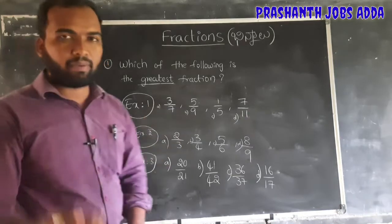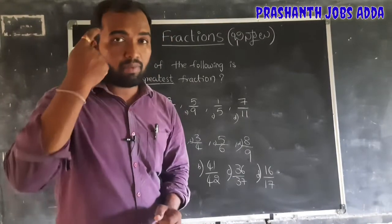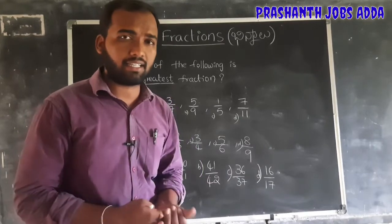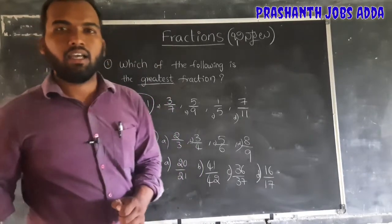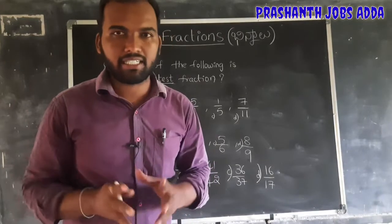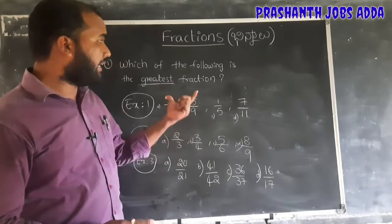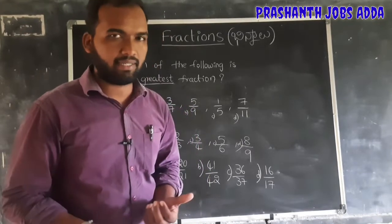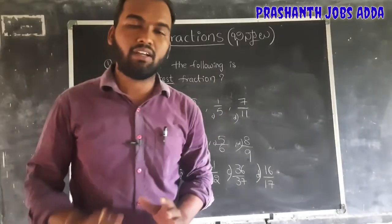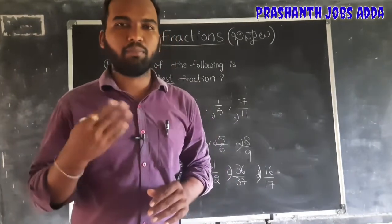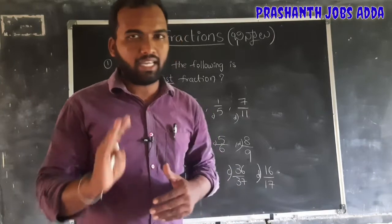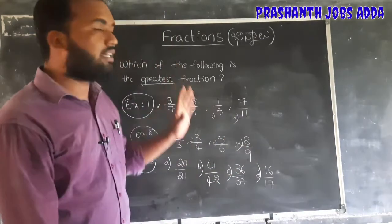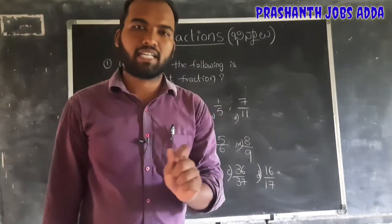Exercise number 3: option A is 20 by 21, option B is 41 by 42, option C is 36 by 37, and option D is 16 by 17. Use whichever method is easiest, answer all three questions, and write answers in the comment box. This is Part 1 of fractions. Parts 2, 3, and 4 videos will be uploaded. Thank you and all the best.